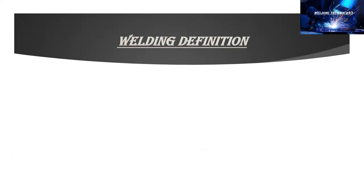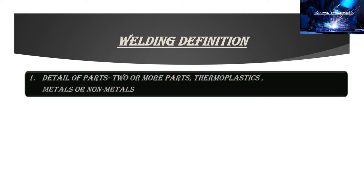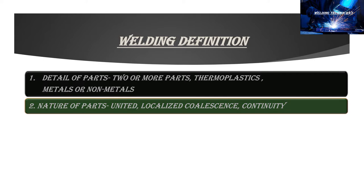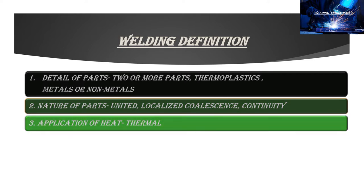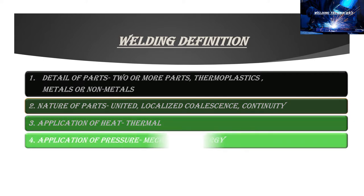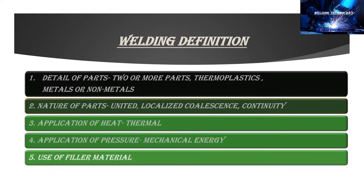There are different definitions given by international bodies. Before going to the definition of welding, we will first understand the basic ingredients required for the definition. There are five components of the welding definition: details of the part, nature of the part, application of heat, application of pressure, and use of filler material.